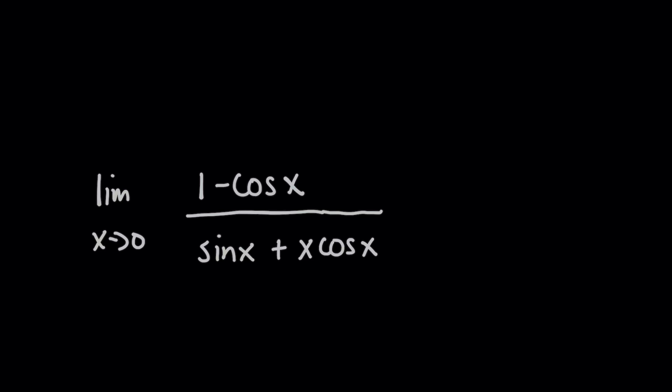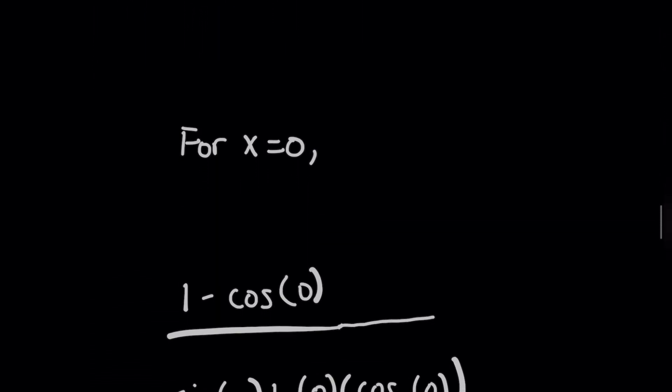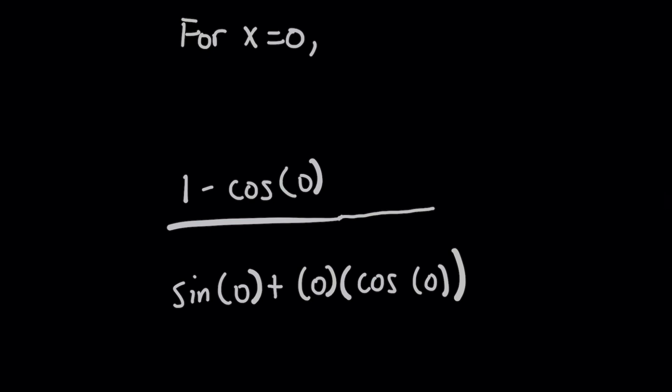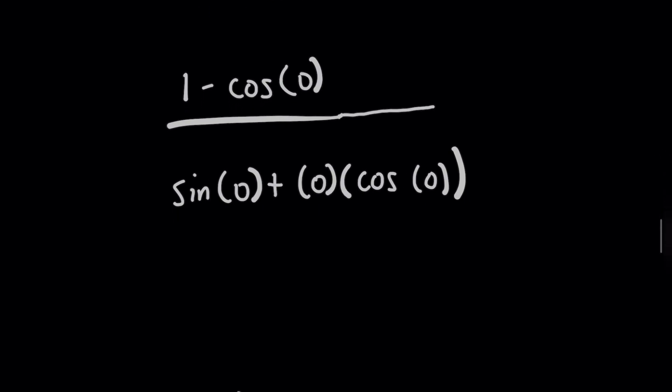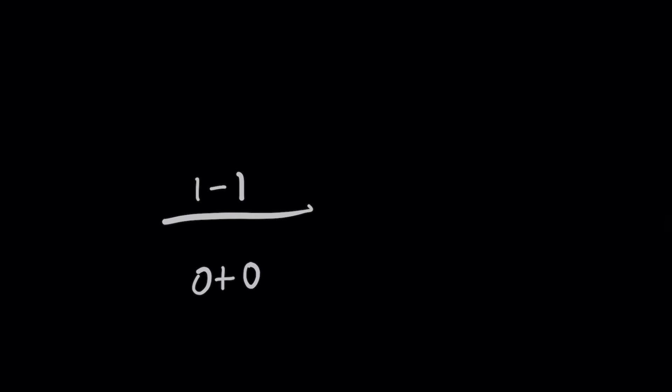Because when I plug in zero now for the top and the bottom, we're going to run into a little bit of a pickle. Because when you simplify this further for x equals zero, you're going to get 1 minus cosine of zero on the top. And then for the bottom, you're going to get sine of zero plus the product of zero and cosine of zero. And again, this is going to simplify to something that's going to be another indeterminate form. We're going to have zero over zero here, but no sweat, because remember, you can apply L'Hopital's rule as many times as you want here, provided that you always end up with one of the indeterminate forms where you're allowed to use the rule.